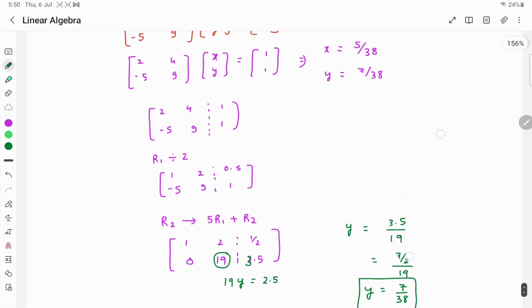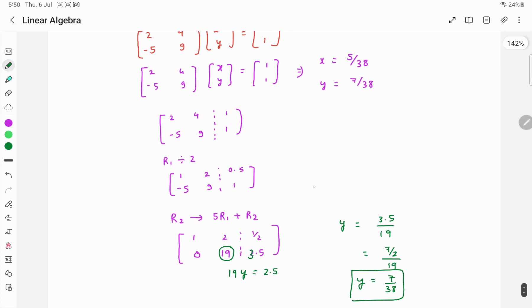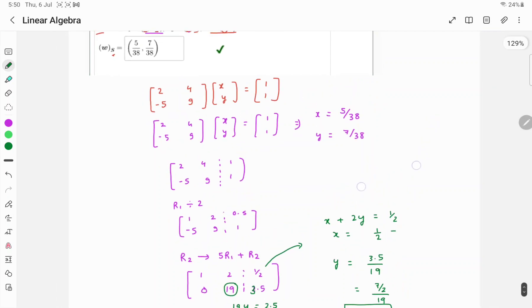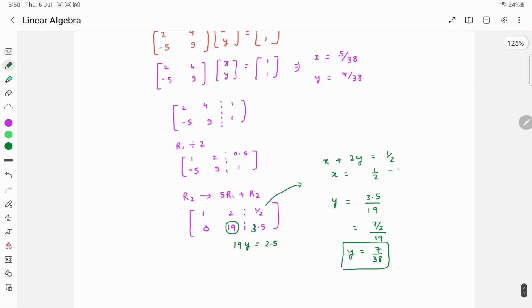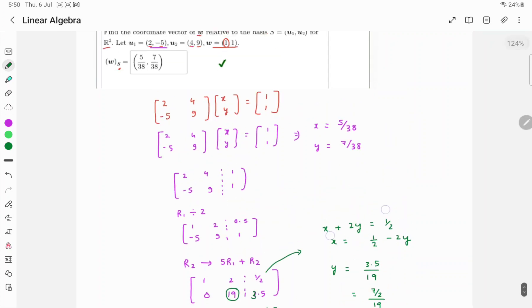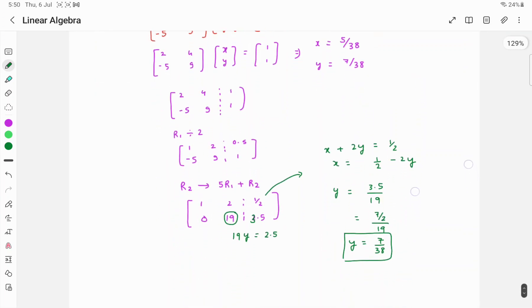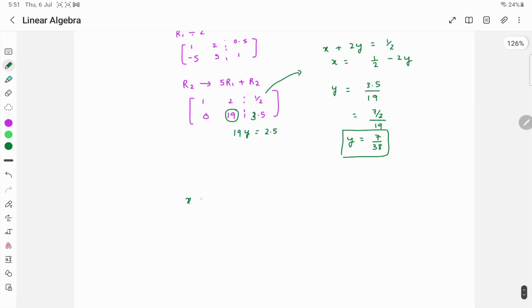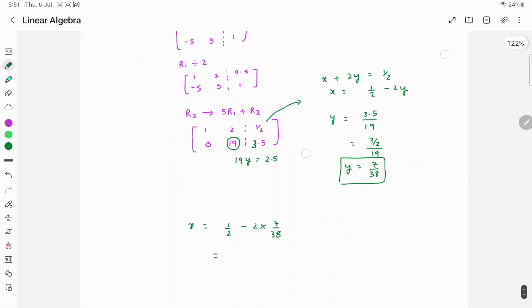Now you can also get the other answer, X, by writing the equation from the first row. So X plus 2Y equals 1 by 2, so X equals 1 by 2 minus 2Y. Clearly, what is the answer? 5 by 38. So we can check it: X equals 1 by 2 minus 2 into Y, which is 7 by 38. If you don't have a calculator, you will need to do it like this. You will get 5 by 38 only.